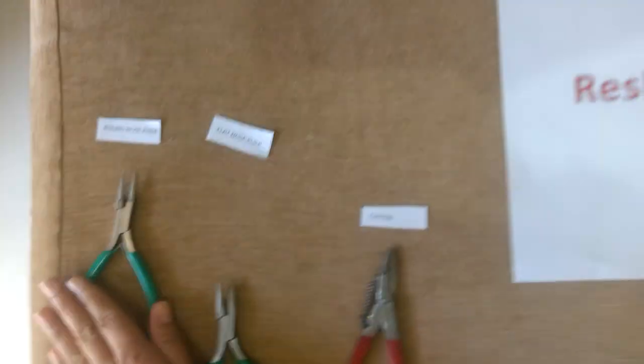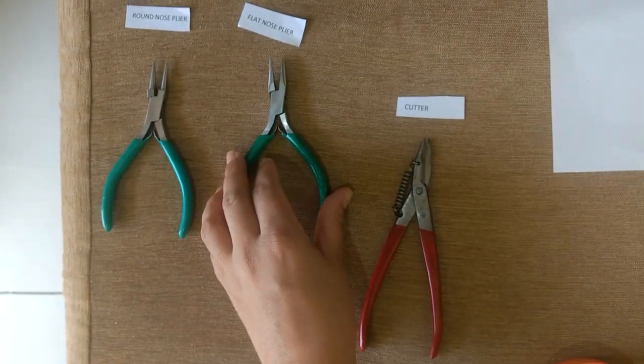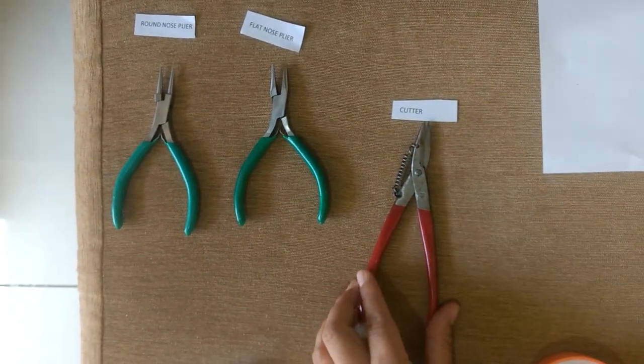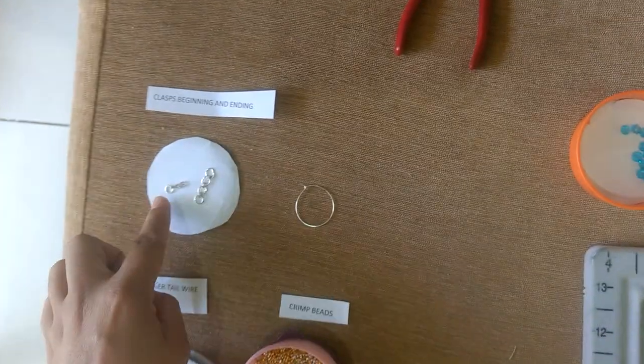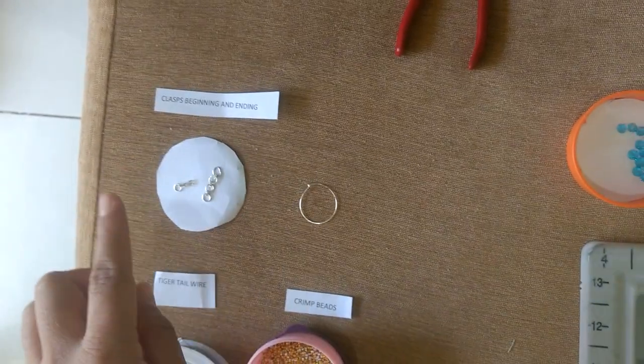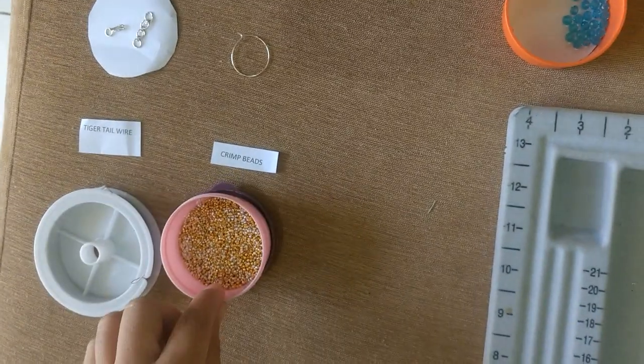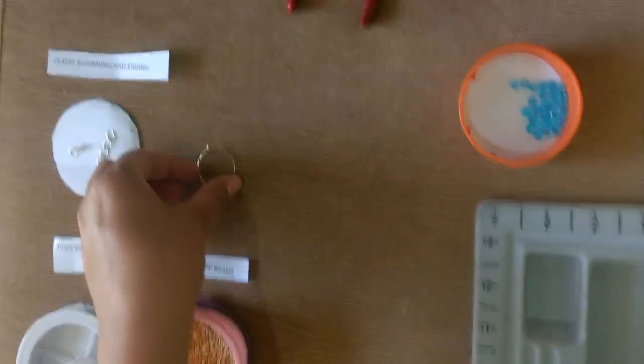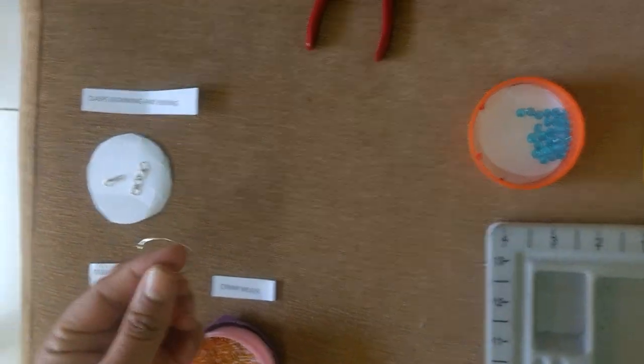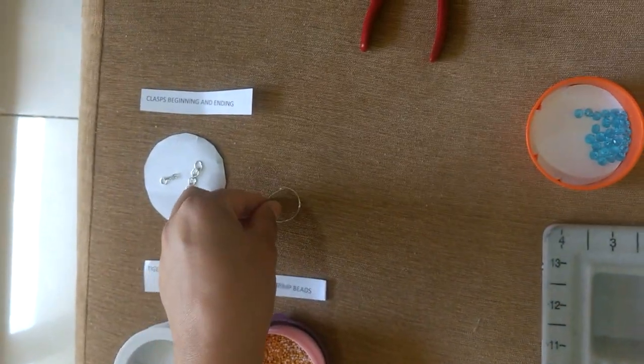For this we need a round nose plier, a flat nose plier, cutter, clasp which is beginning and ending, tiger tail wire, crimp beads, and for earrings this time we are going to use this bali style of hooks.